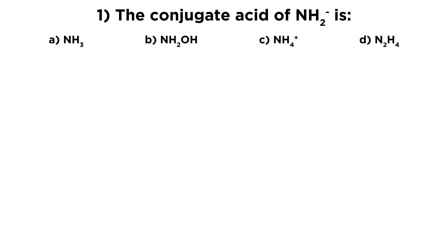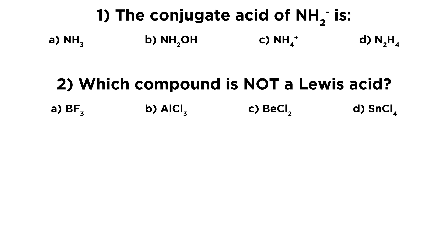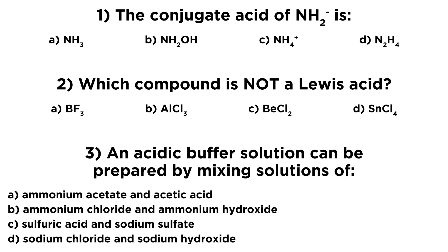The first one asks the conjugate acid of NH2⁻ is, and we have some options there. Number two, which compound is not a Lewis acid — which one cannot behave as a Lewis acid. And number three, an acidic buffer solution can be prepared by mixing solutions of, and then we have four options here. You may want to review some of my tutorials regarding acids and bases or buffer solutions, and when you're ready, give it a try.